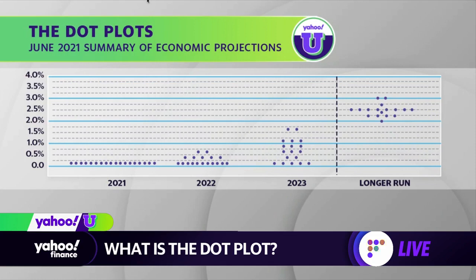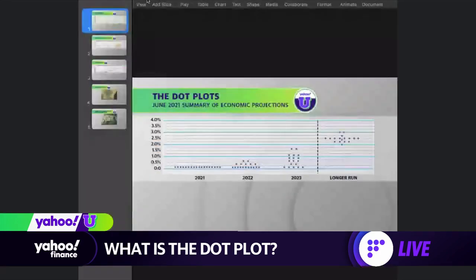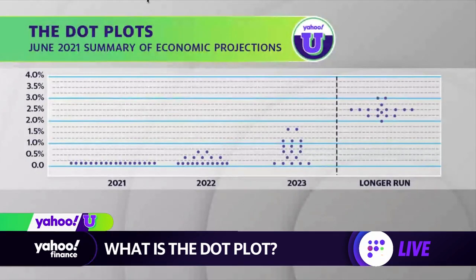These come out quarterly. What you're looking at is where the 18 members of the Fed's policy-setting committee see interest rates going over the next few years and over the longer run. People saw rate hikes coming in 2022 or 2023 — it's showing where interest rates could go in the future. Seven of the 18 members in 2022 saw a possibility for a rate hike, and then in 2023, 13 of the 18 members saw a rate hike.